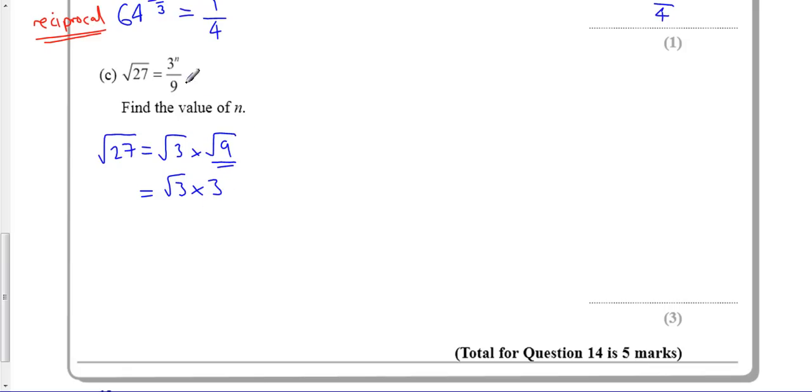If I do the other side over here, I know that 3 to the n divided by 9 is really 3 to the n divided by 3 squared, which is actually written. I take away the powers when I divide.